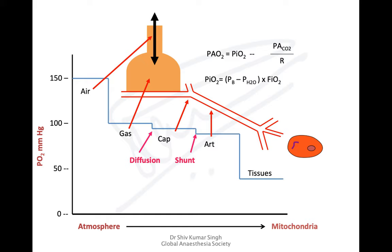The only parameters we can actually control in partial pressure of oxygen are FiO2, and to some extent PaCO2 — by hyperventilating the patient to bring down PaCO2. Normally PaCO2/R is 40/0.8 = 50 mmHg; if you reduce PaCO2 by 20 it becomes 25, slightly increasing PAO2. However, the main way to increase PAO2 is by increasing FiO2 — that is where oxygen therapy comes in.